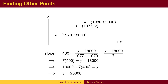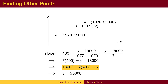We can use the slope to find other data points. Suppose we are interested in the population in 1977. Since we are assuming the rate of change is constant at 400 people per year, the slope to the new point should also be 400. We can solve for y by comparing the 1977 population to the 1970 population. The original population of 18,000 in 1970 should have grown by 400 people per year for 7 years, giving a 1977 population of 20,800.